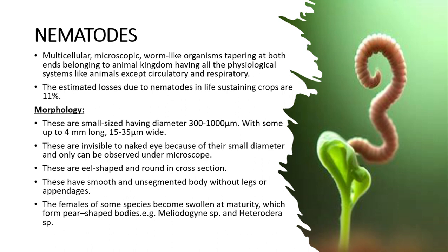The crop losses due to nematodes in life-sustaining crops are recorded as 11%. Looking at the morphology of nematodes, these are small-sized organisms having a diameter of 300 to 1000 micrometers, with some up to 4 mm long and 15 to 35 micrometers wide.